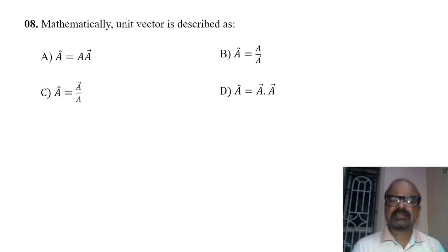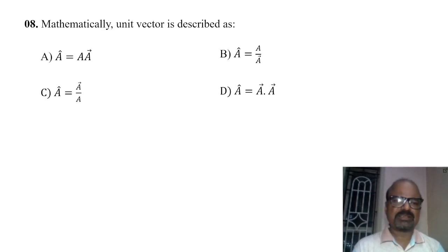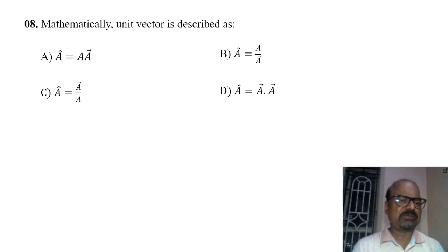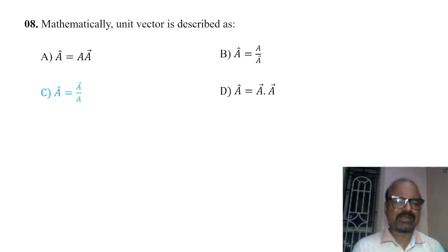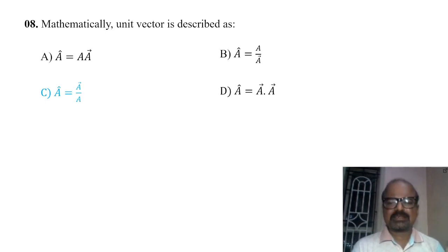Next, mathematically the unit vector is described as a vector divided by its magnitude. So, a-cap is the unit vector of vector A, that is A divided by its magnitude.